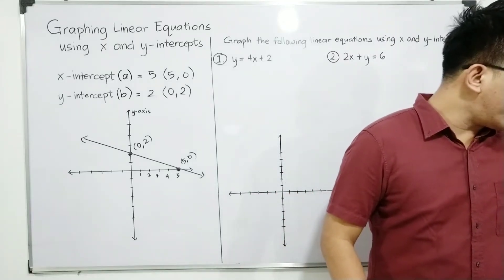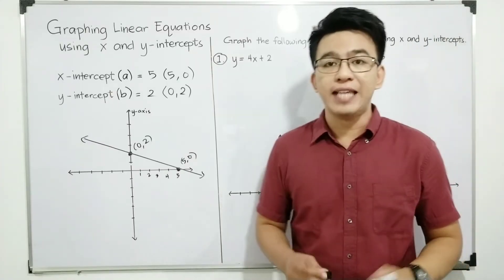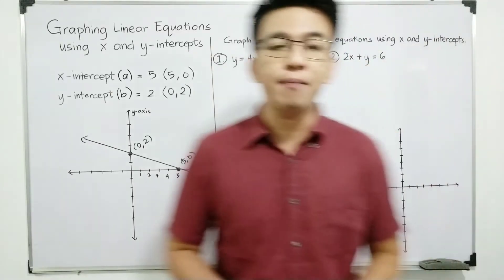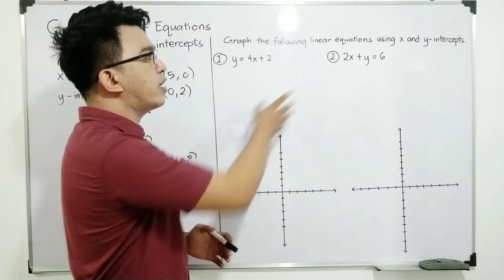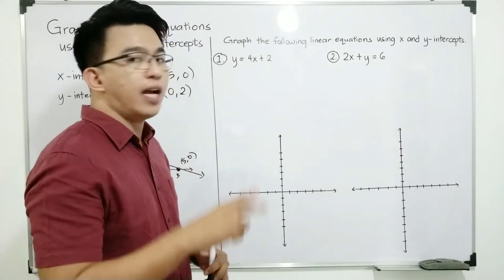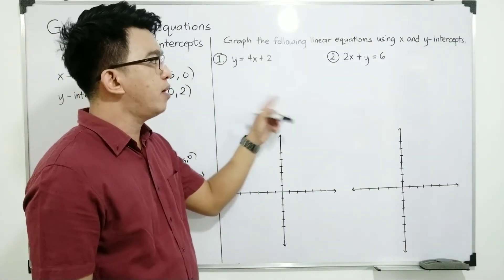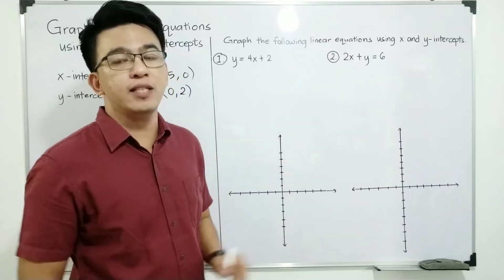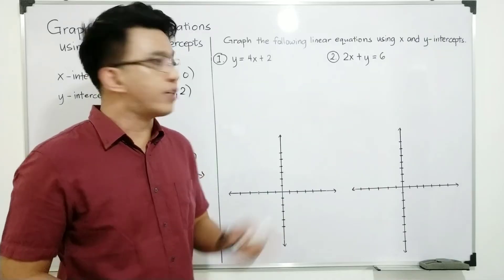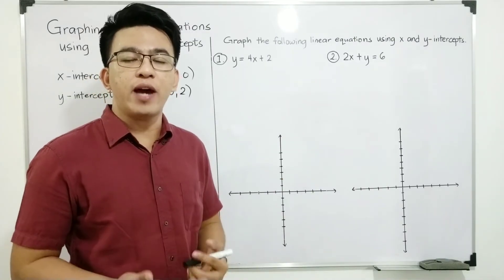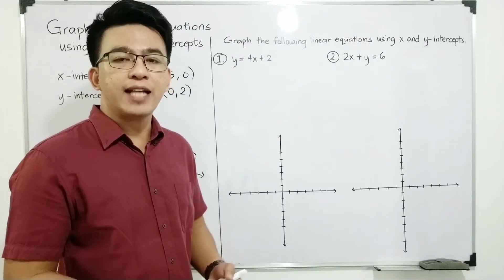In example number 1, I showed you how to work when you're given the direct value of the x and y intercept. Now I have another example where we are given equations, and we will try to graph the following linear equations using the x and y intercept. There are two conditions: first, your equation is in slope-intercept form, and second, your equation is in standard form. To graph these, we are going to solve for the x and y intercept.